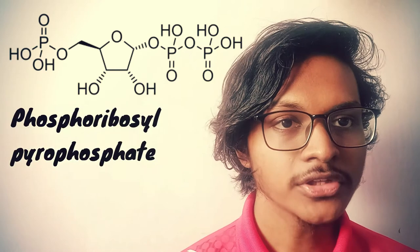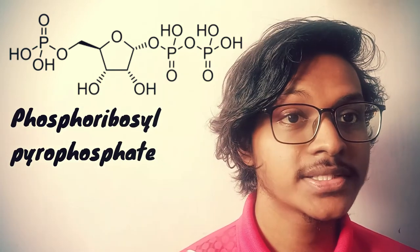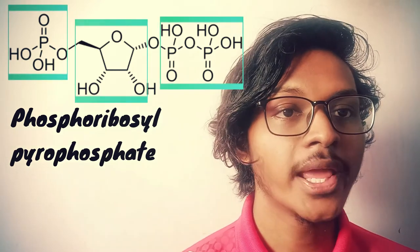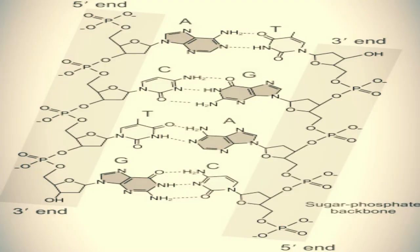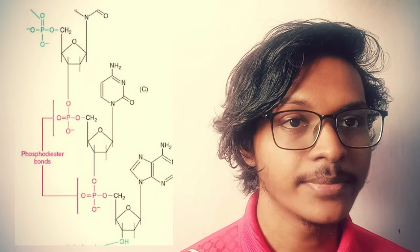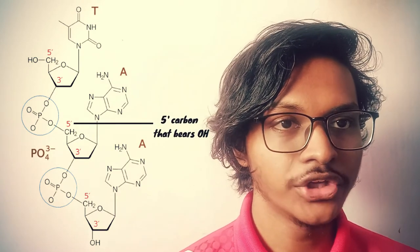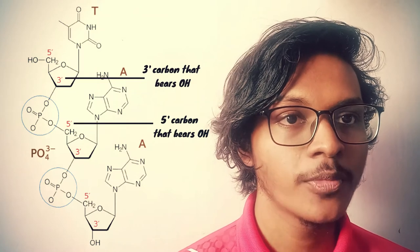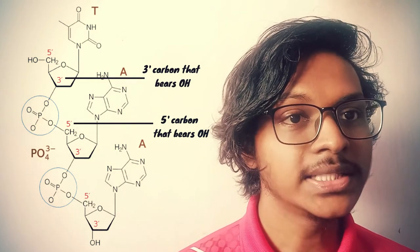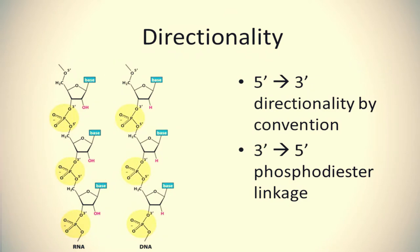All nucleotide synthesis requires the use of phosphoribosyl pyrophosphate, which donates the ribose and phosphate necessary to create a nucleotide. Nucleic acid is a polynucleotide where adjacent nucleotides are linked together by a phosphodiester bond. This covalent bond is formed between the 5-prime phosphate group of one nucleotide and the 3-prime hydroxyl group of another. Five-prime and three-prime refer to directionality, giving the chemical orientation of a single strand of nucleic acid.